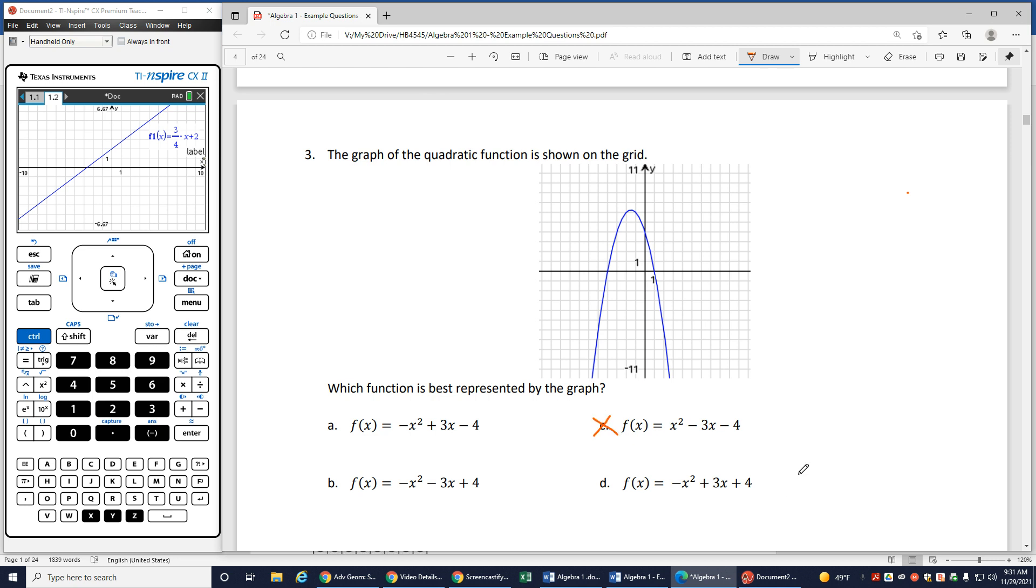And then I can just kind of just check, type them in and see which one matches out of the ones I haven't been able to eliminate. So that's what I'm going to do. I'm going to type in negative x squared plus 3x minus 4. So negative x squared plus 3x minus 4 is a, and I can see that does not look anything like the graph I have there. So that is not going to be my answer.